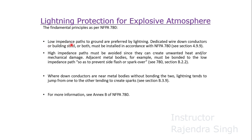A low impedance path to ground is preferred by lightning. Dedicated down conductors or building steel, or both, must be installed in accordance with NFPA 780 Section 4.9.9. High impedance paths must be avoided since they can create unwanted heat and/or mechanical damage. Adjacent metal bodies must be bonded to the low impedance path so as to prevent side flash or spark over.